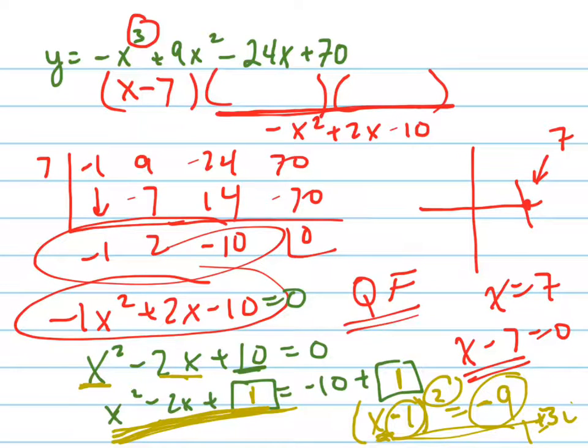So 1 plus or minus 3i, those are your two zeros, so I have x minus 1 plus 3i, and I have x minus 1 minus 3i, because these were my two zeros, my two other, so my zeros were 7, and then 1 plus 3i, and 1 minus 3i.